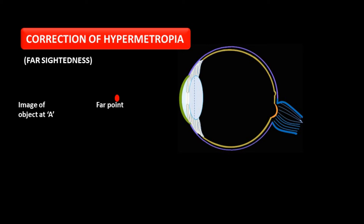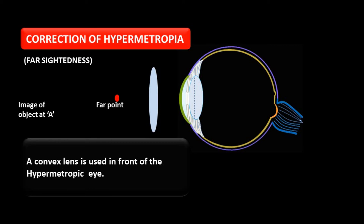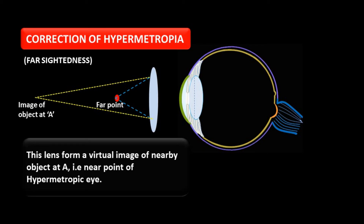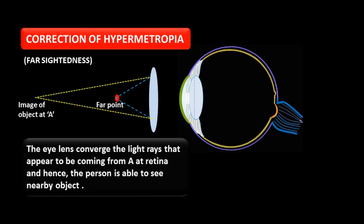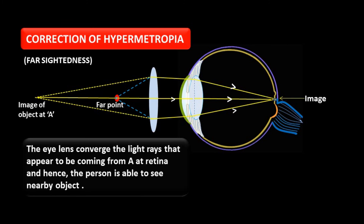Correction of hypermetropia: a convex lens is used in front of the hypermetropic eye to correct this defect. The lens forms a virtual image of the nearby object at the near point of the hypermetropic eye. This virtual image of the nearby object acts as an object for the hypermetropic eye. The eye lens converges the light rays that appear to come from that point onto the retina, and hence the person is able to see nearby objects. Using a suitable convex lens, we can correct hypermetropia.